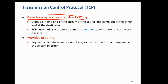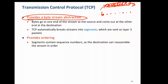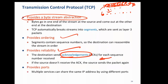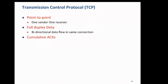TCP provides byte stream abstraction: the application only thinks in terms of a stream of bytes — like water in a pipe, continuously flowing with no boundary. At the other end, the same stream should be received. TCP provides ordering and reliability by explicitly sending acknowledgements. These are point-to-point connections between exactly two endpoints — sender and receiver.